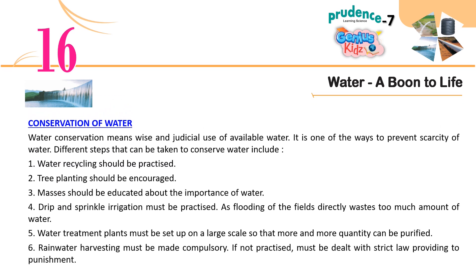Conservation of Water. Water conservation means wise and judicious use of available water. It is one of the ways to prevent scarcity of water. Different steps that can be taken to conserve water include: 1. Water recycling should be practiced. 2. Tree planting should be encouraged. 3. Masses should be educated about the importance of water. 4. Drip and sprinkle irrigation must be practiced, as flooding of the fields directly wastes too much water. 5. Water treatment plants must be set up on a large scale so that more and more quantity can be purified. 6. Rain water harvesting must be made compulsory — if not practiced, must be dealt with strict law providing punishment.